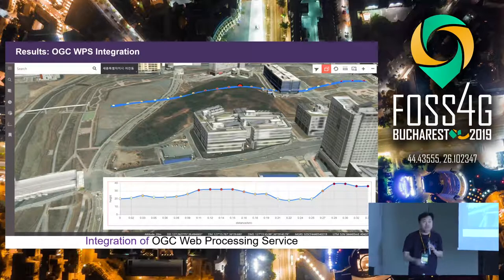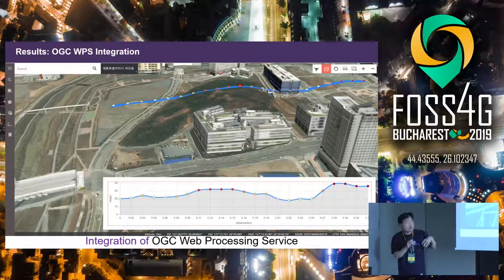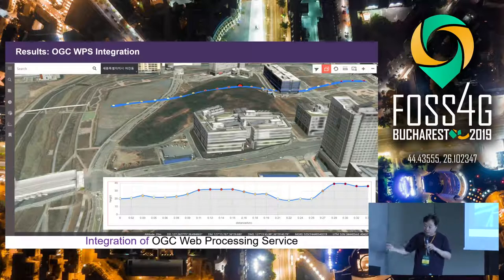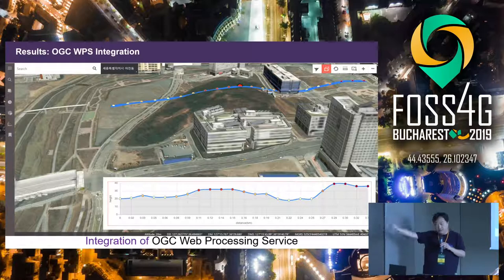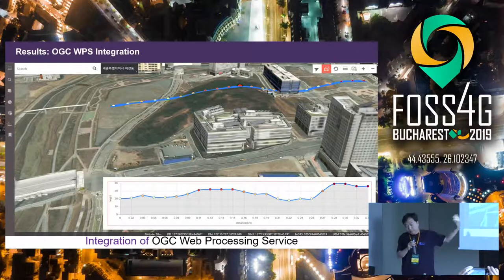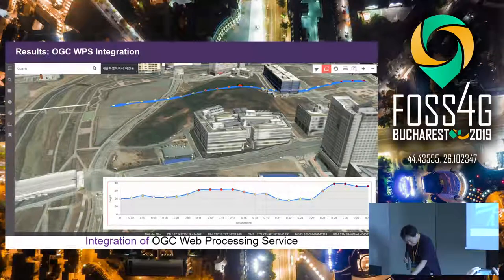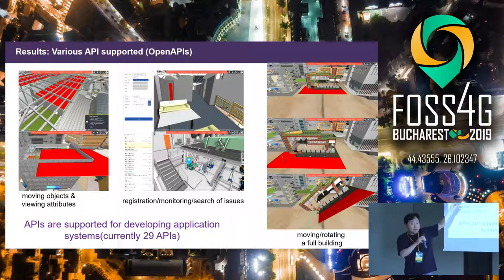We successfully integrated WPS — Web Processing Service from OGC. If you want analytic functions and there is an analytic server, we can request the analytic functions from that server, get a response, and display the results as JSON, GML, or other formats. We provide various APIs so you can handle object-based or block-based data.